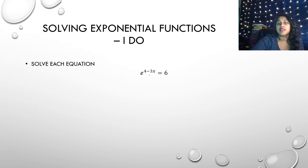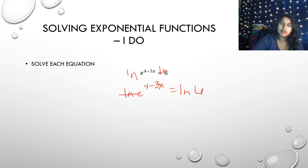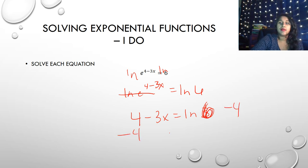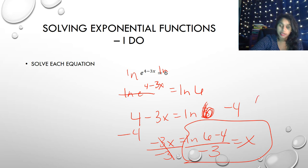Here's another one. Since it's a natural base E, I'm going to take the ln of both sides: ln(e^(4−3x)) = ln(6). The ln and e cancel, leaving 4 − 3x = ln(6). I then subtract 4 from both sides and divide by negative 3. Plugging into a calculator, x ≈ 0.74. That's my final answer.